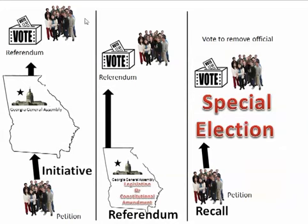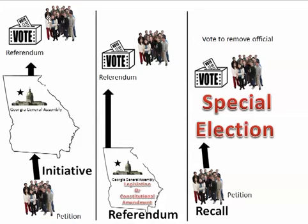Let's look at initiative, referendum, and recall more closely. Through the petition process — which connects to our First Amendment right to petition the government — in the initiative, the people originate an idea and circulate a petition. If they can get 30% of the people who voted in the last election to sign it, they send it to the Georgia General Assembly in Atlanta, which must then put it on a referendum for a vote. The people vote on it directly. In Georgia, this initiative process is not allowed for amending the state Constitution.